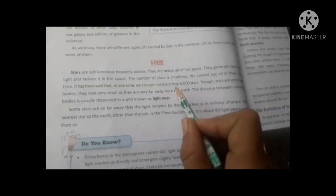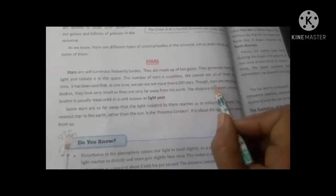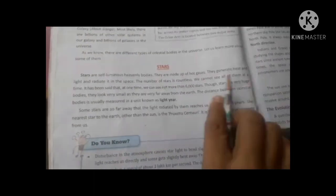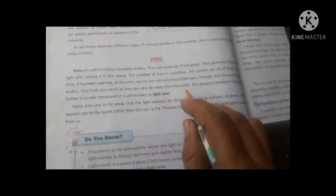Now, when we look at the stars, these stars are actually very large. They look very small because they are very far away from the Earth.